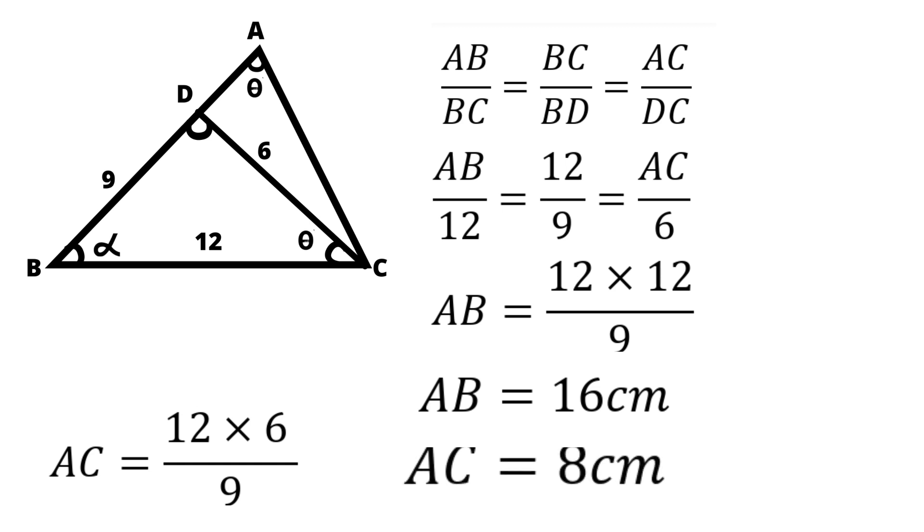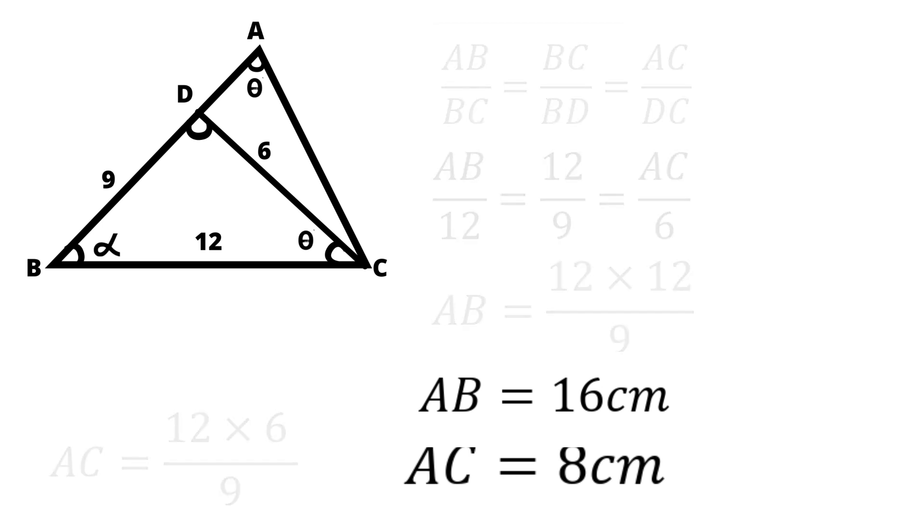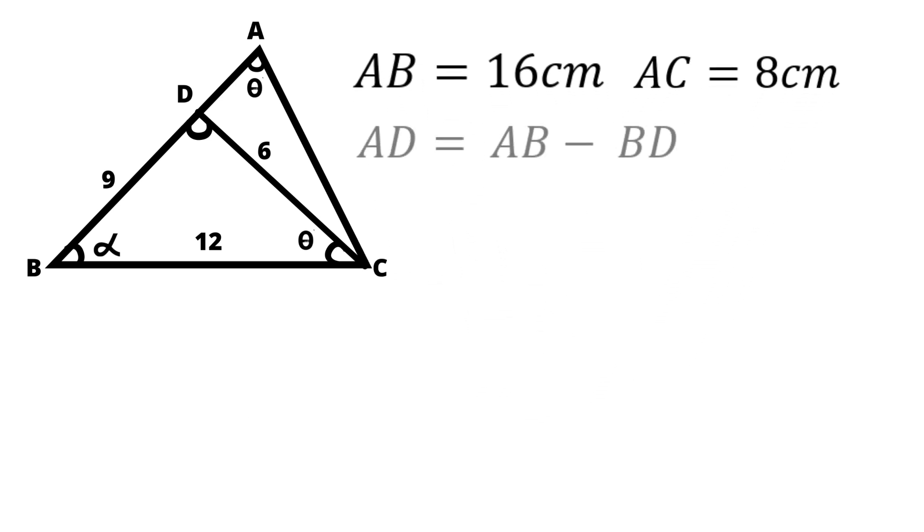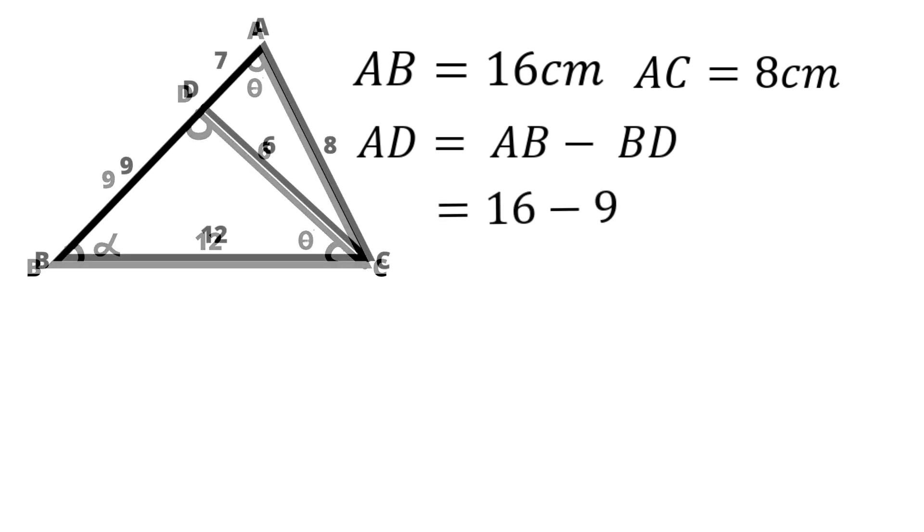Now we have the length of AB. With the help of that, we can easily calculate the length of AD. AD equals AB minus BD which equals 16 minus 9. So the length of AD equals 7 centimeter.